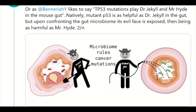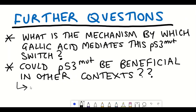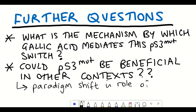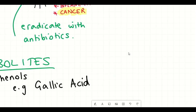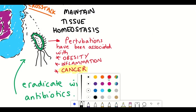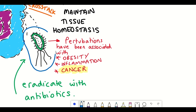Joking aside, understanding when mutant p53 could be beneficial or tumorigenic is important for understanding cancer evolution. If these results are true, it's definitely a paradigm shift in understanding what mutant p53 is capable of. It also reinforces how important it is to take the gut microbiome into account in studies of cancer — and not just cancer, but other diseases as well.